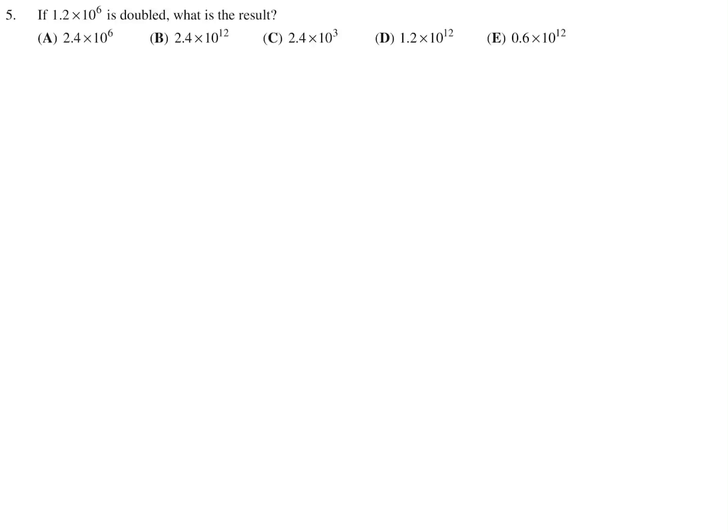If 1.2 times 10 to the exponent 6 is doubled, what is the result? So you have this number, and then you're just multiplying it by 2. So all you really have to do is deal with those two numbers, so that just becomes 2.4, and the rest is untouched. So that would be choice A.